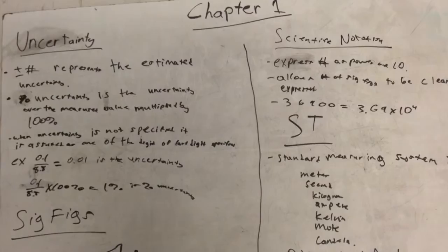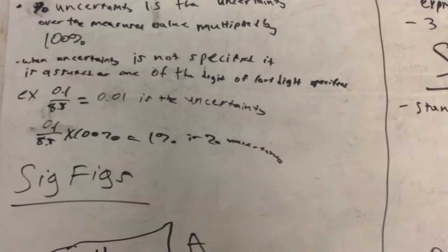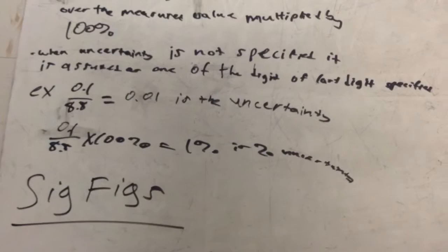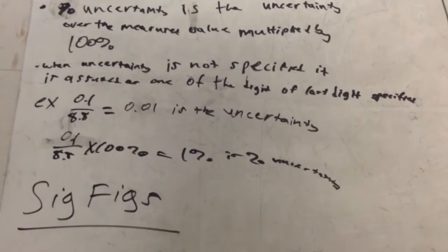That might seem confusing, but it's actually pretty simple. So if 8.8 is the value calculated and you're not given the uncertainty, you can imply that it's 0.1, which is one of the last digits, and that equals 0.01, which is the uncertainty. Now if you want to make that into a percent, you multiply that times 100% and you get 1%.